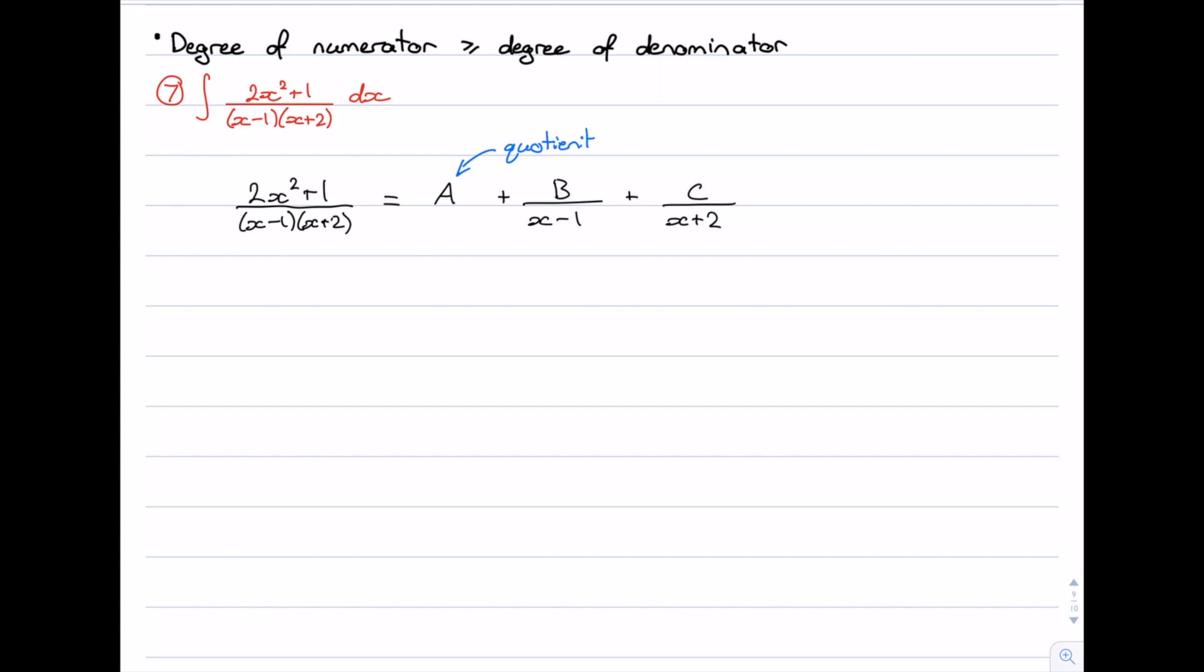Now the numerator on the left hand side is 2x² + 1. On the right hand side, if we were to make a fraction, the numerator would be A(x - 1)(x + 2) + B(x + 2) + C(x - 1).